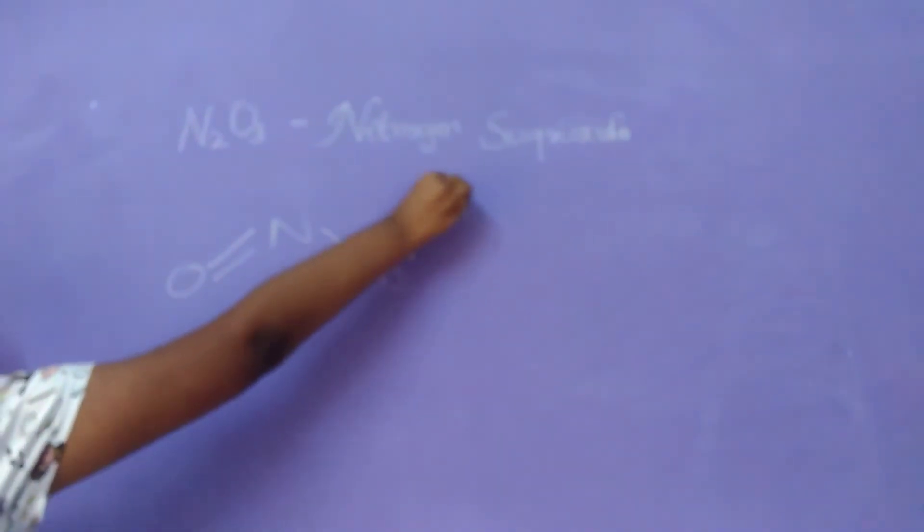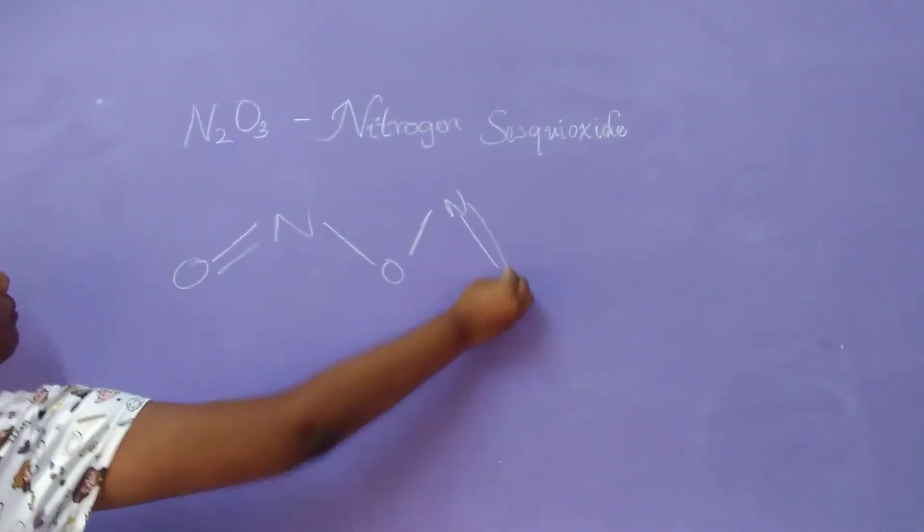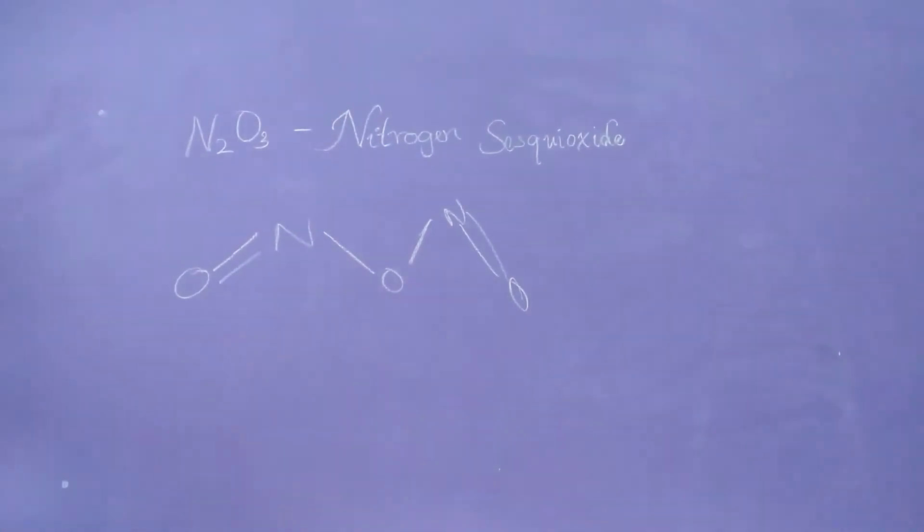Now let us verify this particular thing with structure method. So the structure of N2O3 will be O double bond N, N single bond O, O single bond N double bond O.